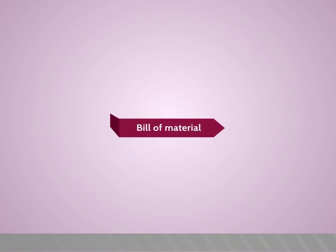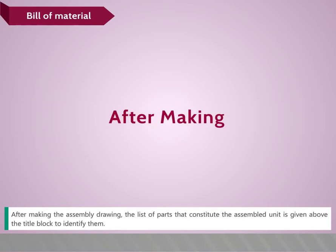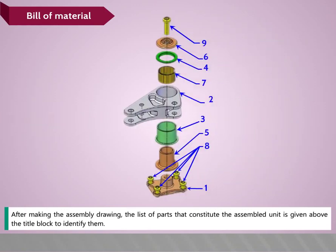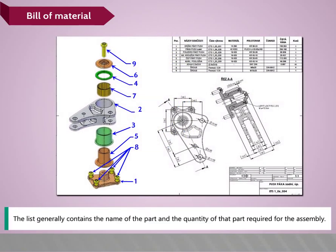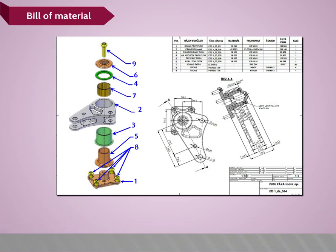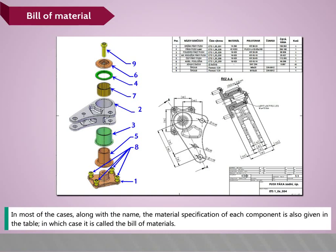Bill of materials: after making the assembly drawing, the list of parts that constitute the assembled unit is given above the title block to identify them. The list generally contains the name of the part and the quantity required for the assembly. In most cases, the material specification of each component is also given, in which case it is called the bill of materials.